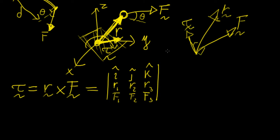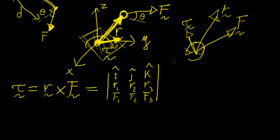Torque is essentially a rotational force — this force causes rotation about the pivot point. The direction of rotation is found using the right-hand rule: point your thumb in the direction of the torque vector, and your fingers curl in the direction of rotation.